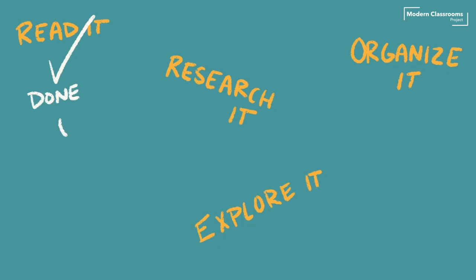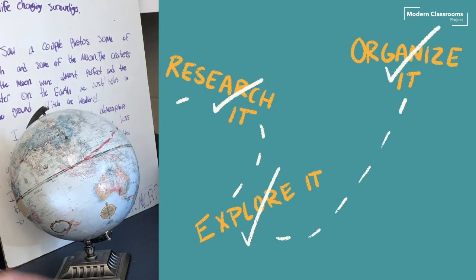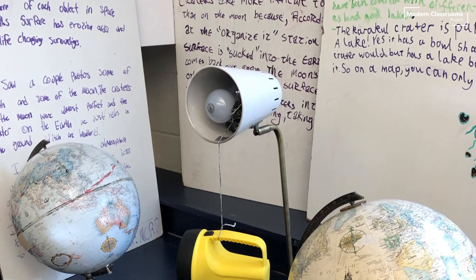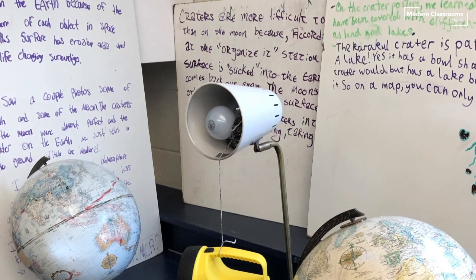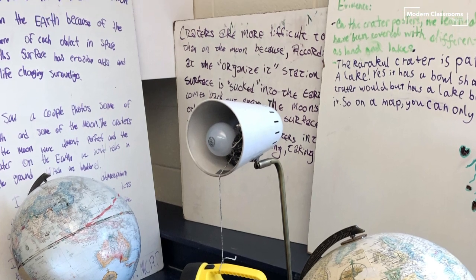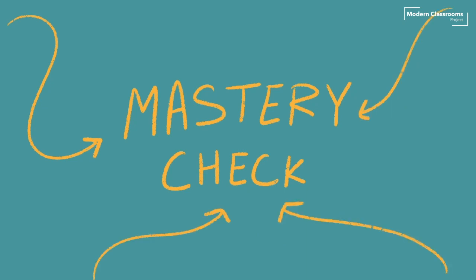When students finish one station, they simply move along their self-paced learning path to the next one. Sometimes students are required to complete all stations. Other times, they only have to complete a certain number of exploration stations before they reach a Mastery check, a place where all of the branching paths eventually converge.